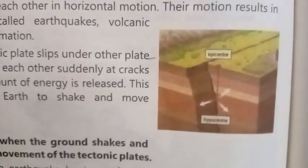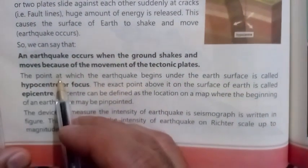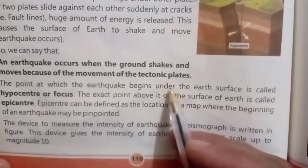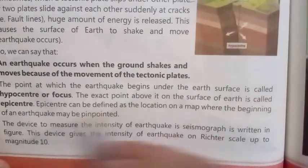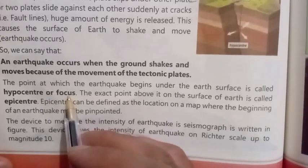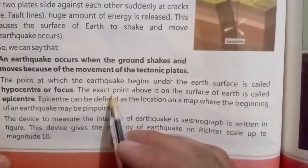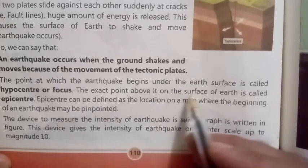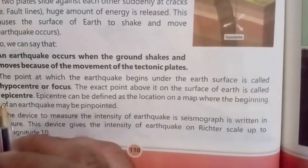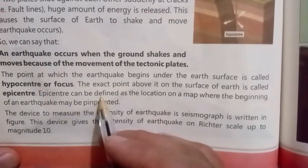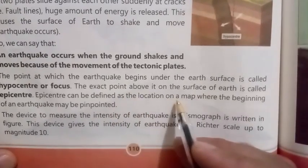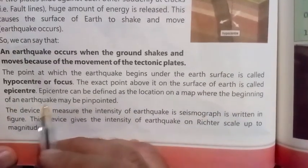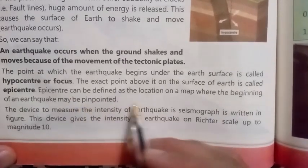The point at which the earthquake begins under the earth's surface is called the hypocenter or focus. The exact point above it on the surface of the earth is called the epicenter. The epicenter can be defined as the location on a map where the beginning of an earthquake may be pinpointed.